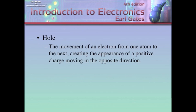Now, hole, this is a movement of an electron from one atom to the next, creating the appearance of a positive charge moving in the opposite direction. This is a question that was asked last chapter. This is a different philosophy, a different theory on how current flows. Here they say holes are flowing from positive to negative. I'm saying electrons are flowing from negative to positive. It really doesn't matter. Because if it's 6.24 times 10 to the 18th electrons that flow that way, or 6.24 times 10 to the 18th holes that flow that way, it's still going to give us an equal amount of current.